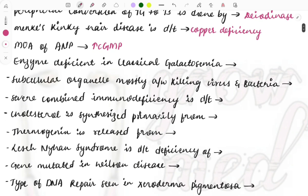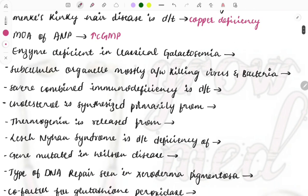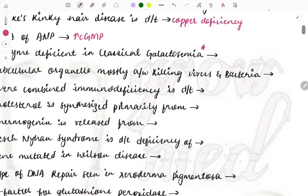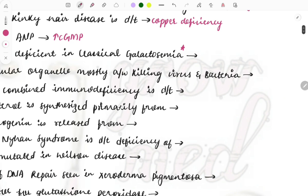Enzyme deficient in case of classical galactosemia. This is an important topic because frequent questions are asked on the clinical features. One important feature associated with this is cataract. Which enzyme is deficient? It is the GAL PUT 1 enzyme which is deficient. Frequently questions are asked on this one.